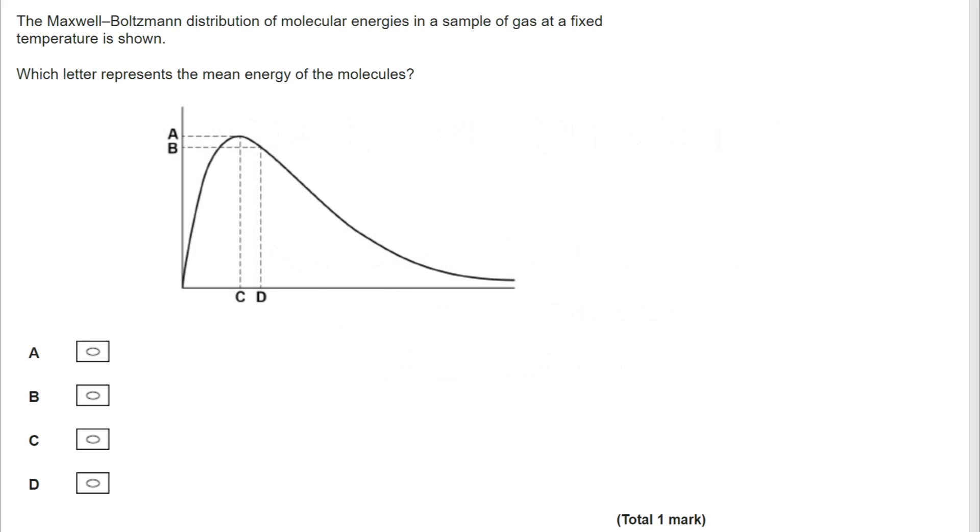So we'll start off with the first question. Maxwell Boltzmann will play a big part of the multi-choice component of this particular topic. In this case, we want to know which letter represents the mean energy of the molecules. Well, first of all, we've got to remember that the energy axis is the x-axis, so the answer has to come from there.